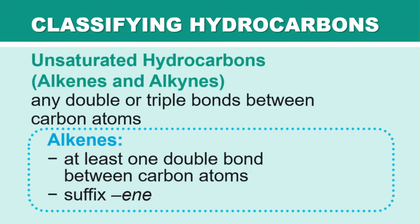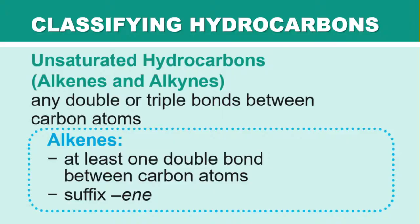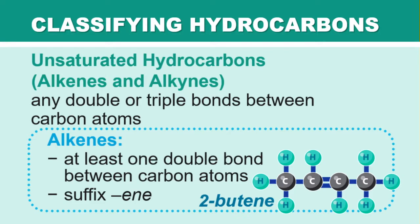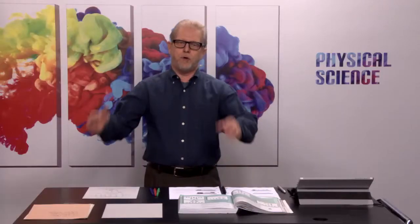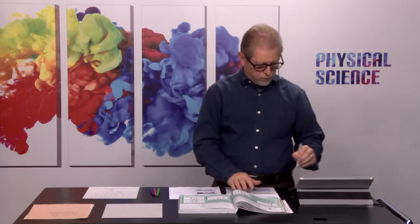The prefix tells you how many carbons. For example, propene has a double bond between two of its three carbons. Here's another example: 2-butene. The number tells you where the double bond is — if you number the carbons, the double bond starts on carbon number two. From either side, it's still on carbon number two.